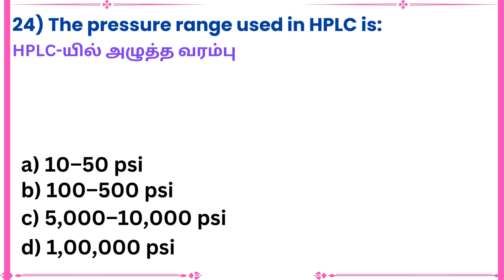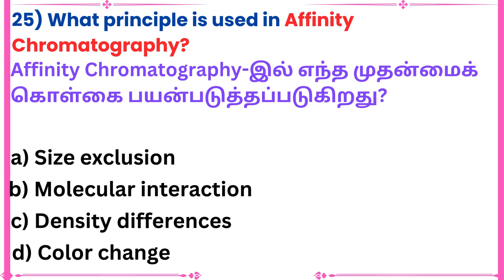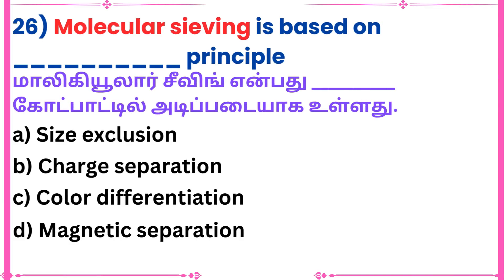Twenty-fourth question: The pressure range used in HPLC is — Answer: 5000 to 10,000 psi. Twenty-fifth question: What principle is used in affinity chromatography? Answer: Size exclusion. Twenty-sixth question: Molecular sieving is based on — principle. Answer: Size exclusion.